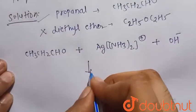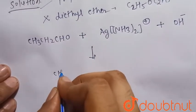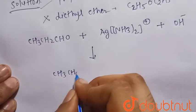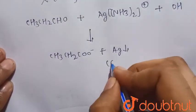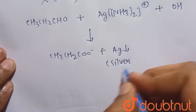So there is the formation of the propanoate ion, that is CH3COO-, and Ag. This is the silver mirror.